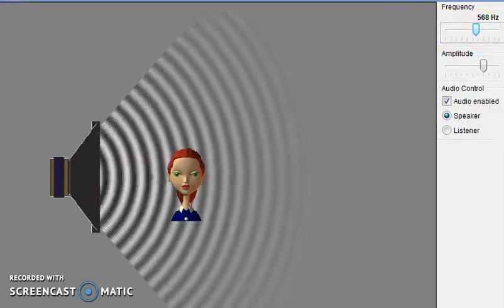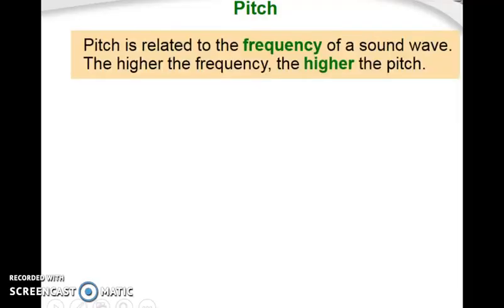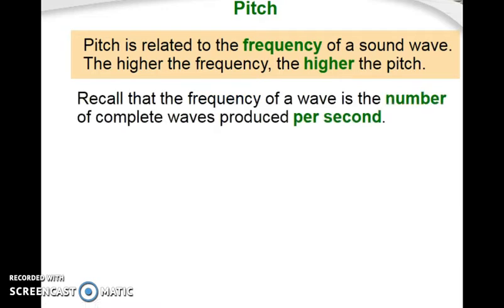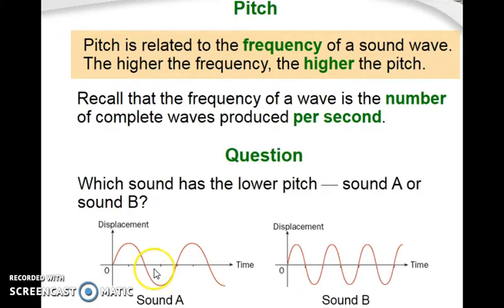So what exactly is pitch? Pitch is basically related to the frequency of a sound wave. Just now we saw the higher the frequency, the higher the pitch. We recall frequency from waves is actually the number of complete waves produced per second. So got a question for you - which sound wave, A or B, actually has a lower pitch? You can see you're absolutely correct - lower pitch will be sound A because it has a lower frequency. So frequency is related to pitch - the higher frequency, the higher the pitch.